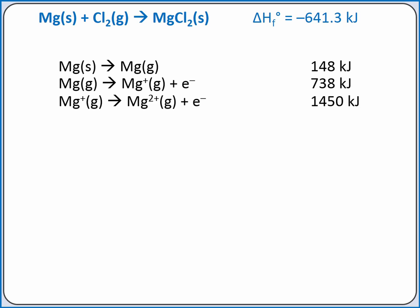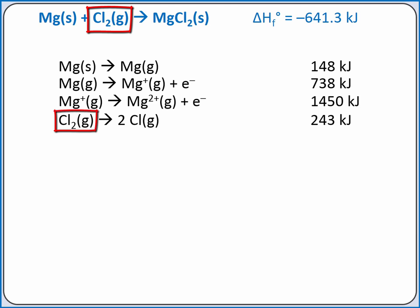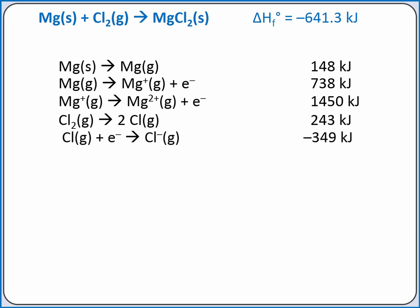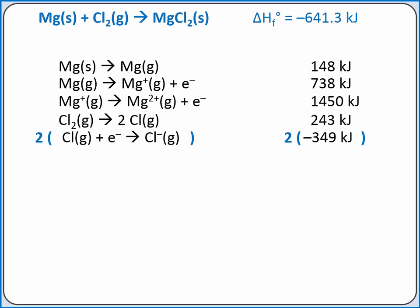The next information we're given is the bond energy for a chlorine-chlorine single bond — the energy required to break the bond in the chlorine gas molecule to produce 2 chlorine gas atoms. Since we have 1 Cl₂ gas in our standard enthalpy of formation equation, we add this equation as is to get 1 mole of Cl₂ gas as a reactant. The next information is the electron affinity for chlorine, which is the energy released when we add an electron to a gaseous chlorine atom. Since we produced 2 moles of gaseous chlorine atoms, we multiply this equation and its enthalpy change by 2. The last step is to combine our gaseous magnesium ion with our 2 gaseous chloride ions to produce solid magnesium chloride, and the enthalpy change for this process is the lattice energy.